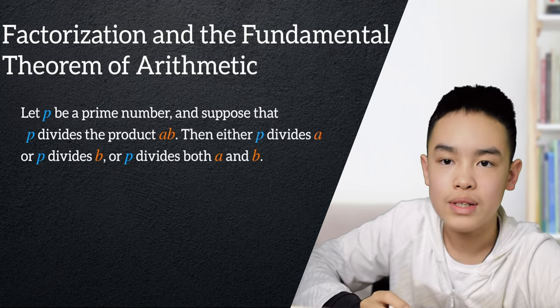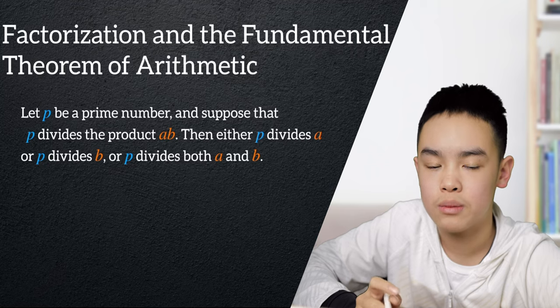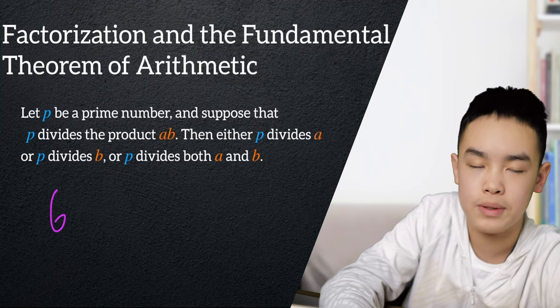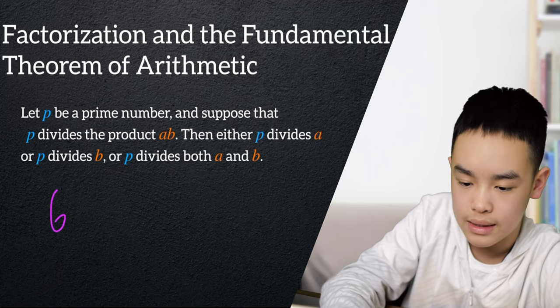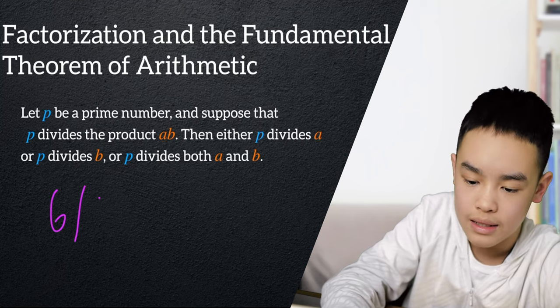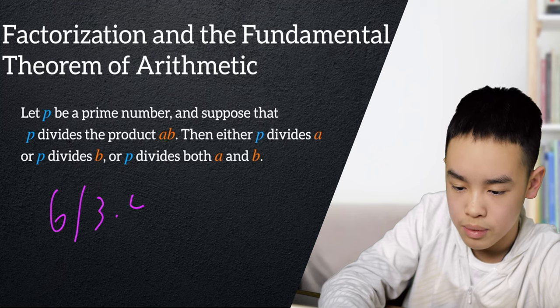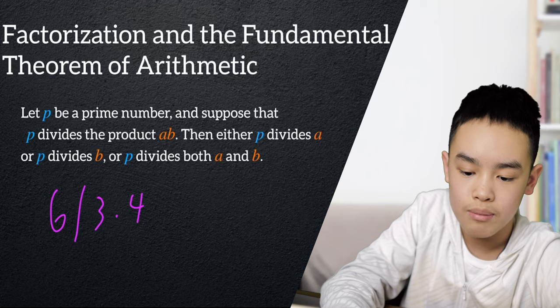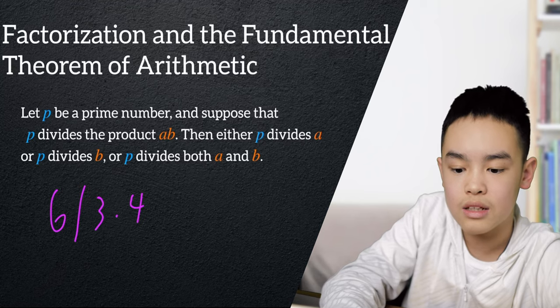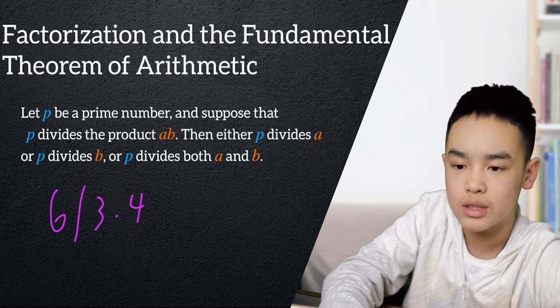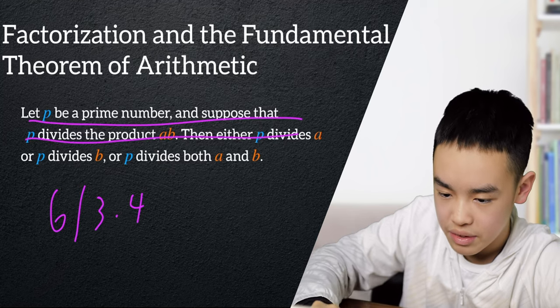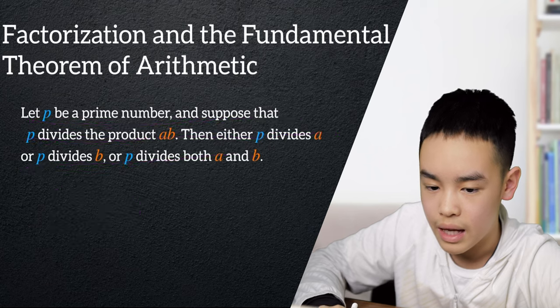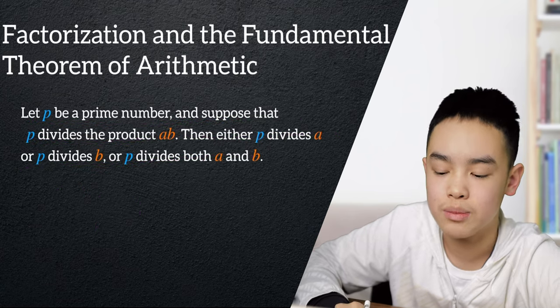Now, you guys might say that this doesn't even need a proof, but in fact it does, since if p is not a prime number, let's say if p is 6, and it can divide a product a and b, let's say 3 times 4, which is 12, but 6 can neither divide 3 nor divide 4. So this seemingly very obvious theorem actually needs a proof.